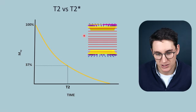We can apply this 180-degree RF pulse at any point and measure the echo at the same distance beyond it, varying the TE time. A shorter TE gives higher signal, and a longer TE gives lower signal. We can plot these signal values over time for the different tissues we're imaging to see the T2 relaxation curve.